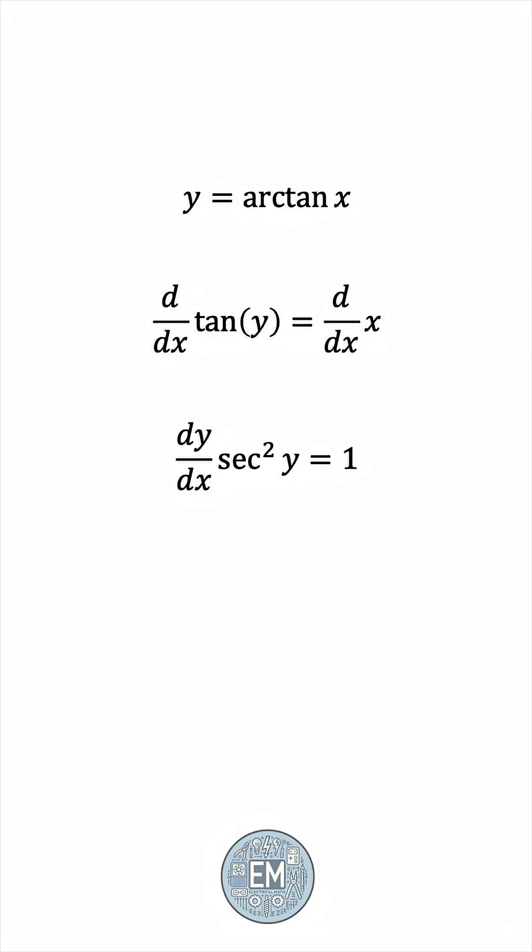And now we can find dy by dx, which is the derivative of the arctan function, by dividing both sides by this secant squared y. With this, we're pretty much done, except we don't want to see any y terms in the answer. This secant squared y has to be rewritten purely in terms of x.